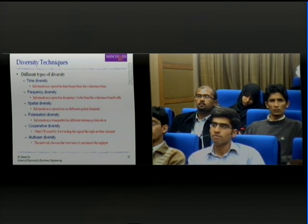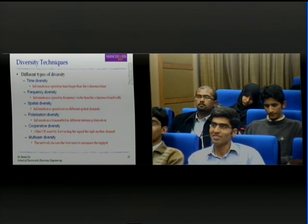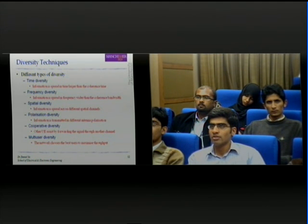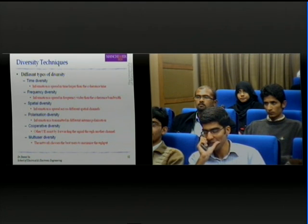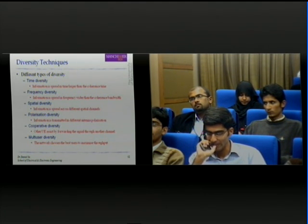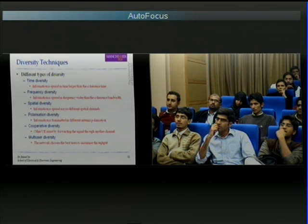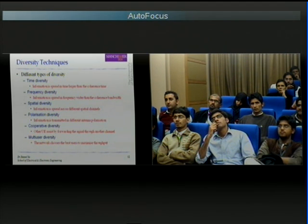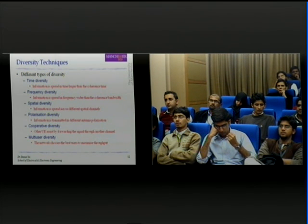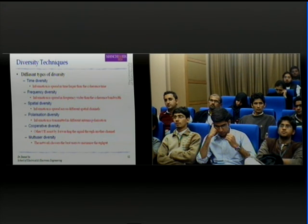For cooperative diversity, the idea is that other users or other nodes will assist your transmission. The other users could be using different frequencies or transmitting at different times. The key point is that because the other user sees a different channel, if your classmate or colleague next to you helps by forwarding the signal, you will have a different observation of the channel and could get better performance.